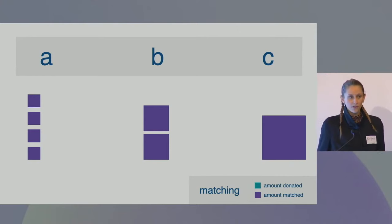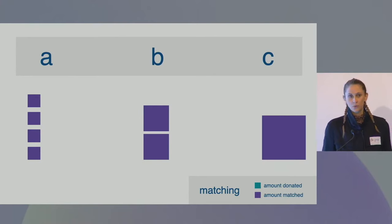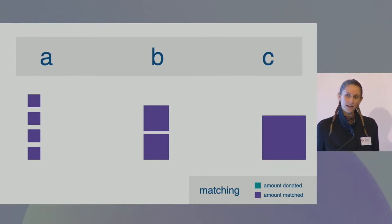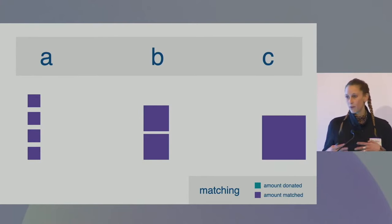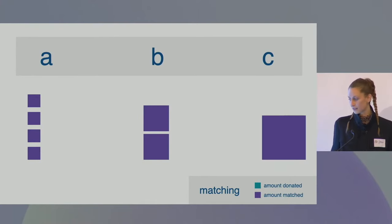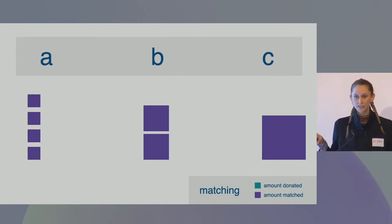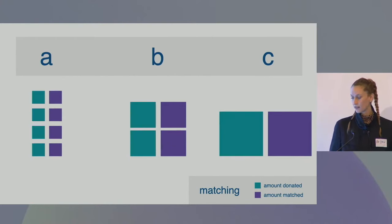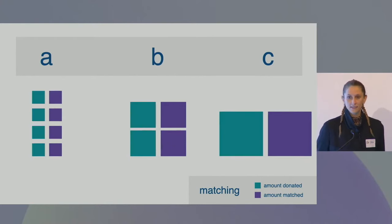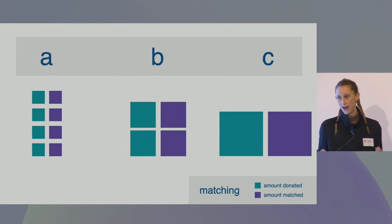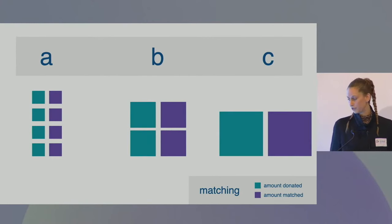So in a typical matching fund — a linear matching fund — we'll get an allocation of public funds or sponsored funds that looks like this, where the largest amount of funds in this case went to Project C, which was the one that got the largest monetary value of contributions.